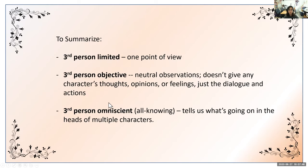To summarize: third person limited is just one point of view. Third person objective gives neutral observations — just the dialogue and actions. And third person omniscient, which means all-knowing, tells us what's going on in the heads of multiple characters — the author can skip around in the heads of those multiple characters.